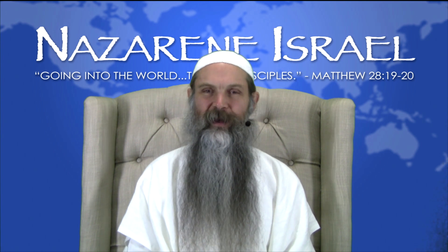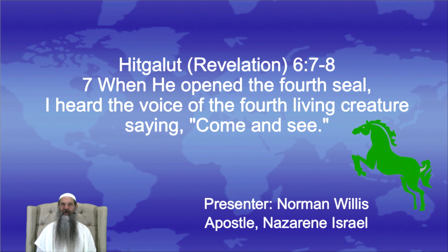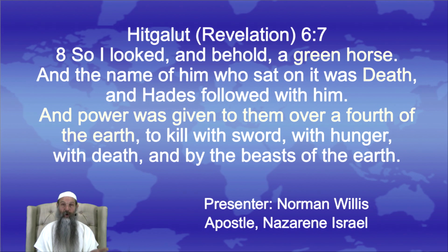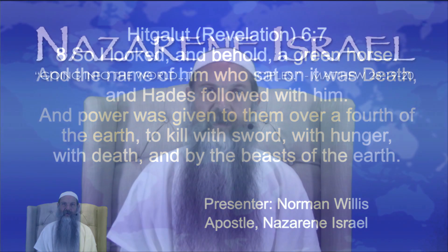We'll talk about how that plays into Babylon. In Revelation 6:7-8, 'When he opened the fourth seal, I heard the voice of the fourth living creature saying, Come and see. I looked, and behold, a green horse — King James reads pale, but we'll see it's green. And the name of him who sat on it was Death, and Hades followed after him. Power was given to them over a fourth of the earth' — about how much of the land mass Islam controls — 'to kill with sword, with hunger, with death, and by the beasts of the earth.'